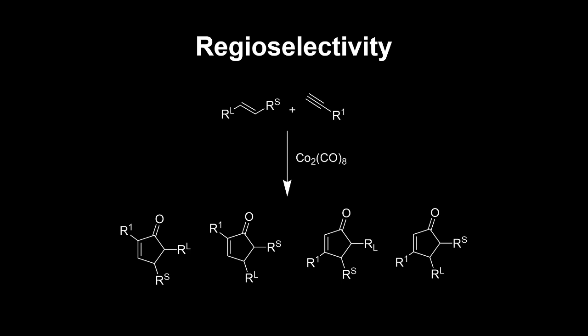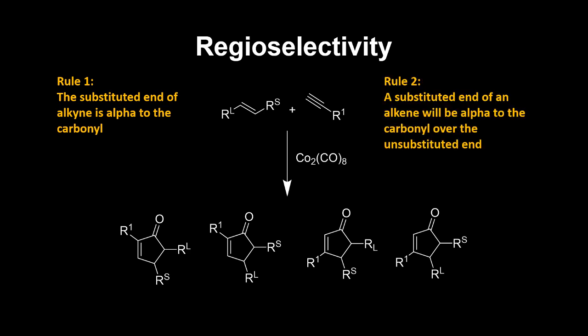Regioselectivity is a key aspect of most reactions, and the Pauson-Khand is no exception. Any given combination of alkene and alkyne can have up to four unique cyclopentanone outcomes under these conditions, so how do we determine which will be the major product? There are two rules we can implement to greatly simplify this. The first is that the substituted end of our alkyne will almost always be alpha to the carbonyl — this is the most valuable bit to remember, since both products with this connectivity are typically major. The second rule is that the substituted end of the alkene will also tend to be alpha to the carbonyl, which gives us this regioselective order for the possible reaction outcomes.